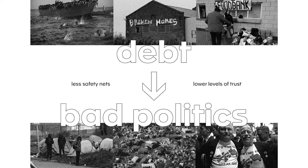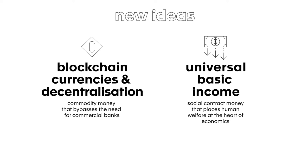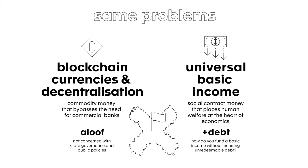Two ideas have gained traction recently. On one side, cryptocurrencies have been deemed as the next step of commodity money — they bring technological innovations that bypass the need for banks. On the other side, a claim for universal income is acknowledging money as a social contract and placing human welfare at the heart of economics. However, these ideas have yet to develop a well-rounded answer to the state money social contract. Blockchain projects are not concerned with state policies, and a universal basic income, if simply presented as a demand, fails to answer the question: how would you fund it without creating more unredeemable debt?